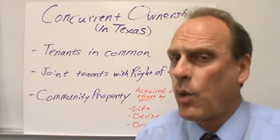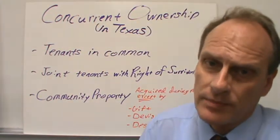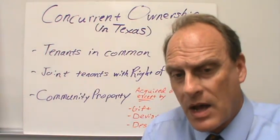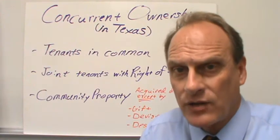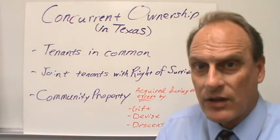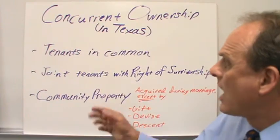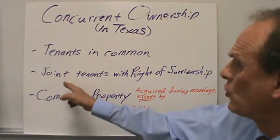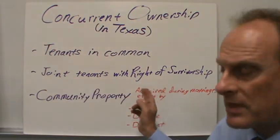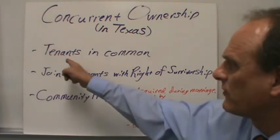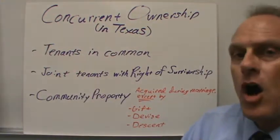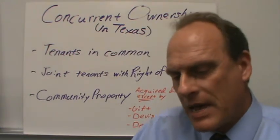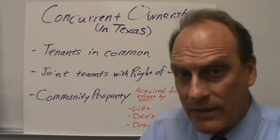Nationwide, there's a fourth type called tenancy by the entirety, which is a marital type of holding that we don't recognize in Texas. We have something else we'll get to in a minute. In Texas, what we do have are tenants in common, joint tenants with right of survivorship, and community property. Let's take the first one — tenants in common.